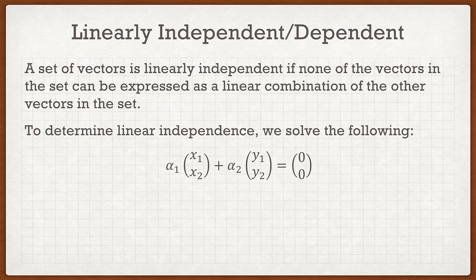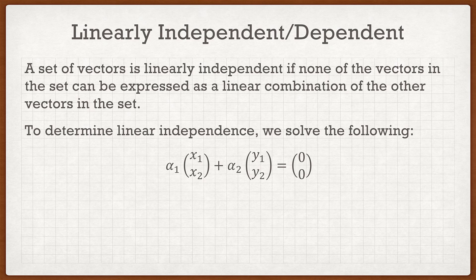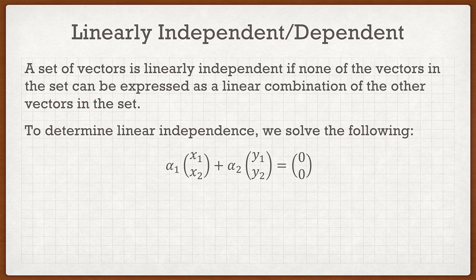This applies to higher dimensions too. We can do R3 where instead of x1 and x2, we'll have x1, x2, and x3, and same with y. Luckily for us, we're in R2, so we only have x1 and x2, and then y1 and y2. If we look at this equation, we know x1, x2, y1, and y2, those are given. The 0 vector is just the 0 vector. So the only unknowns are alpha 1 and alpha 2.